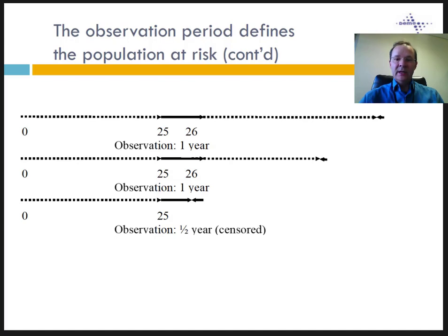We make the assumption that all censored individuals are equally distributed over the time interval. If the time unit of observation is the year, that means we assume individuals are censored on average at mid-interval. In our example, we assume that the younger individual is censored at 25 and a half years old. The same assumption of uniform distribution is made for all events that are recorded, whether they are censoring or other events.